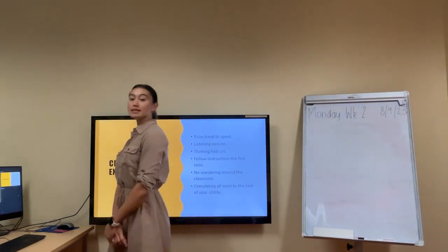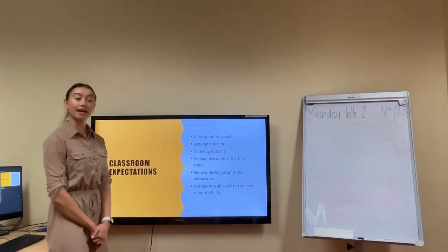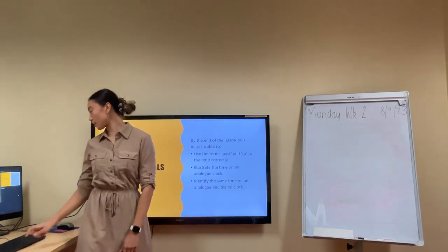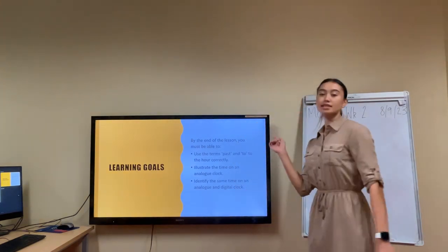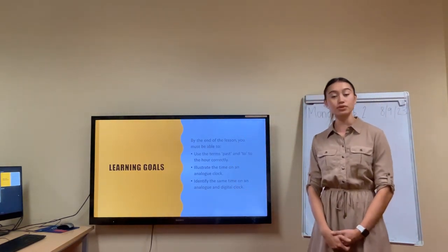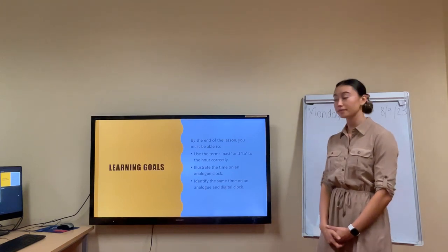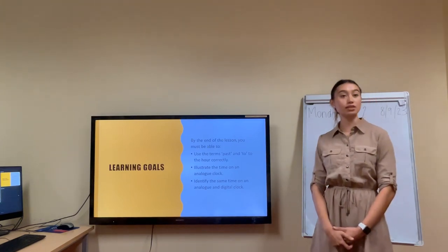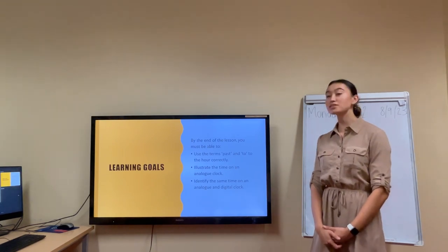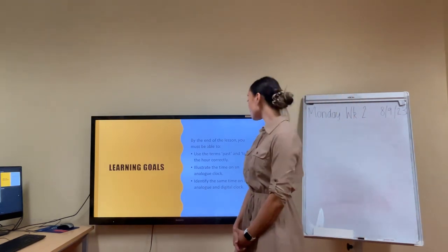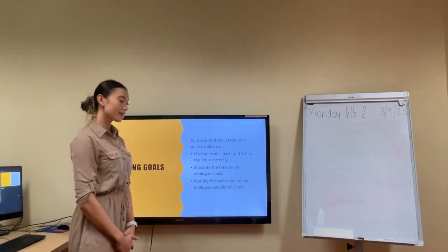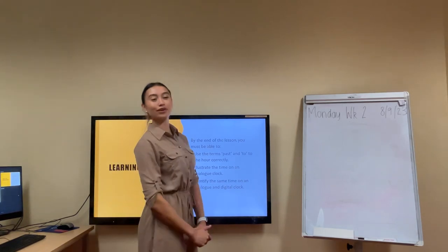Now we're going to begin today's lesson with some maths. Our learning goals are: by the end of this lesson you must be able to use the terms past and to to the hour correctly. You must also be able to illustrate the time on an analogue clock and identify the same time on an analogue clock and digital clock.